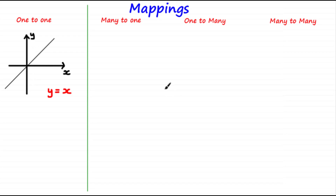Welcome to this video tutorial on mappings. We'll be understanding what a mapping is, looking at the different types of mappings you'll need to know and how to identify each type, and looking at different ways to represent a mapping. A mapping is even more general than a function — it gives you a rule or tells you a relationship between two sets of elements.